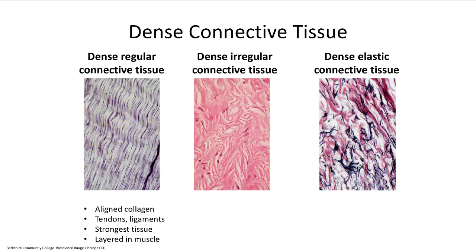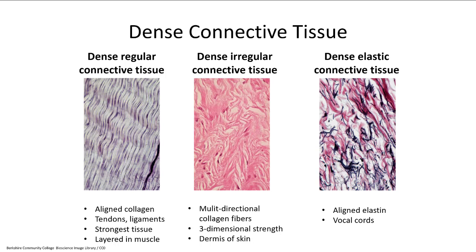Dense irregular connective tissue has collagen fibers crisscrossing in different directions, making the dermis of our skin very strong in multiple directions — unlike a tendon which only pulls from point A to point B. Then there's dense elastic connective tissue, which has aligned elastin fibers and is found in the vocal cords. For exams, focus on dense regular connective tissue as the strongest and what it looks like, and dense irregular connective tissue and its role in making up skin.